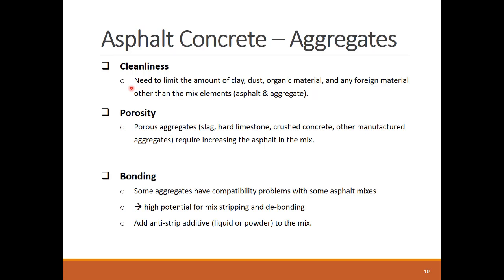Finally, the bonding between the aggregate and asphalt cement binder is important, and some aggregate types can have binding compatibility issues with some asphalt cements. To resolve this bonding problem, anti-strip additives are added to the mix at the production plant or in the supplied asphalt cement.